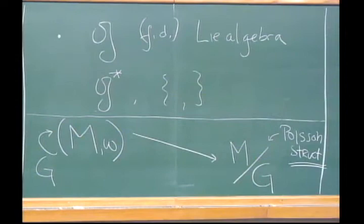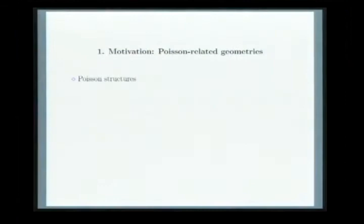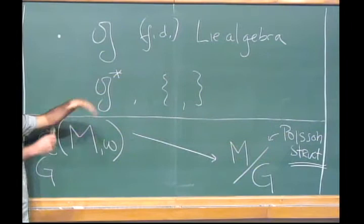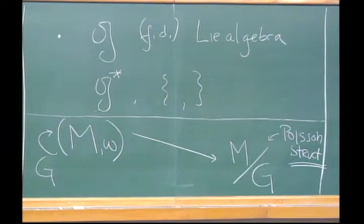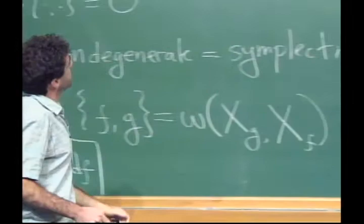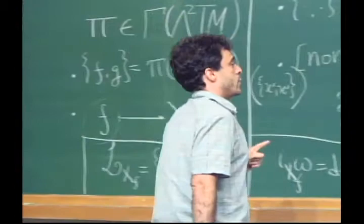This abstraction was introduced by Lichnerowicz, I think in the late 70s, but it really started being systematically studied as a separate field of differential geometry in the early 80s. Several geometrical structures appeared in connection with Poisson geometry. One is the concept of a Lie algebroid, which extends the relationship between Lie algebras and linear Poisson structures to arbitrary Poisson manifolds. This places Poisson geometry as part of an extended Lie theory, which has been very useful.